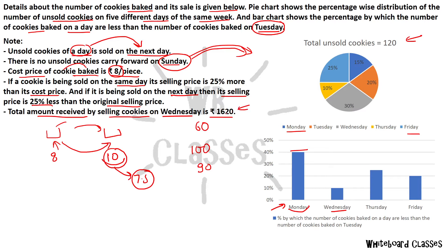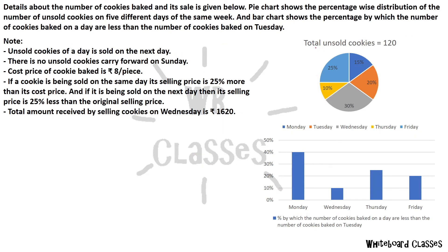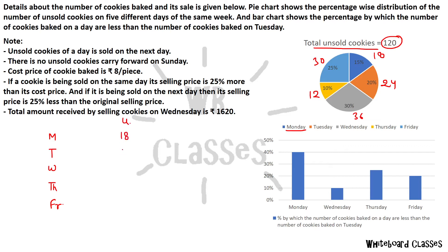Now let's find values we can understand. If we talk about unsold cookies, the total is 120. The percentages give us: Monday 15% = 18 cookies, Tuesday 20% = 24, Wednesday 10% = 12, Thursday 25% = 30, Friday 25% = 30 unsold cookies for those five days.